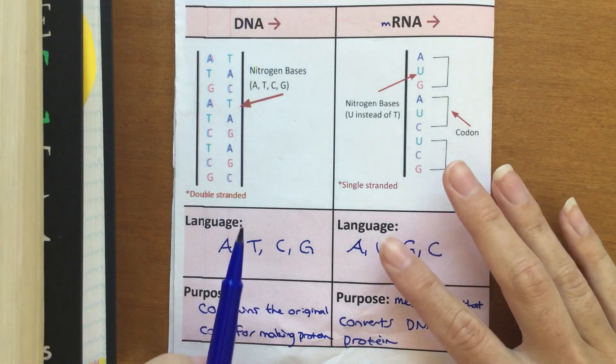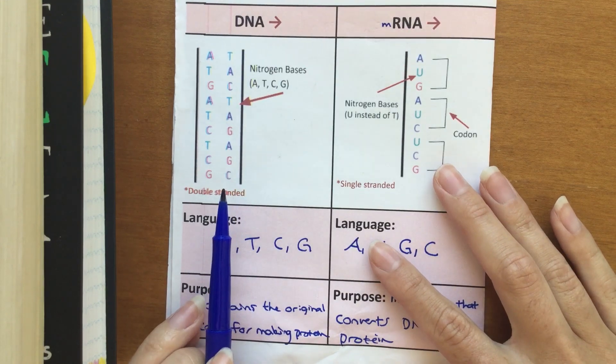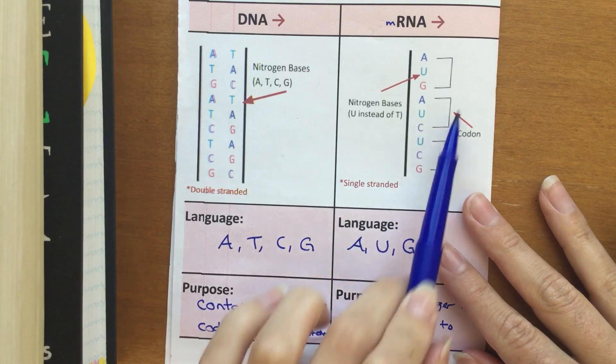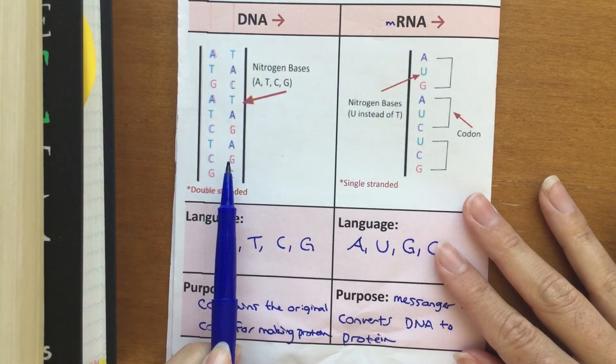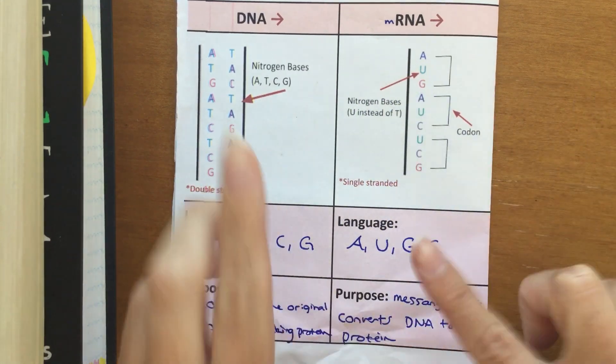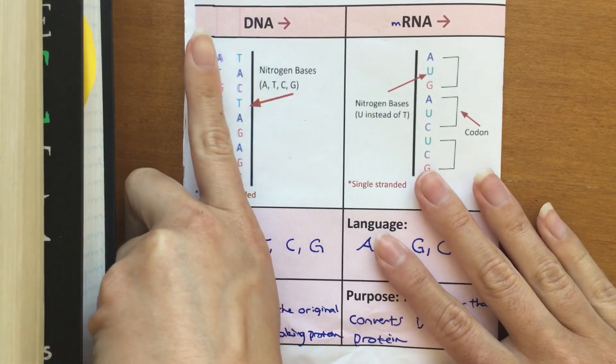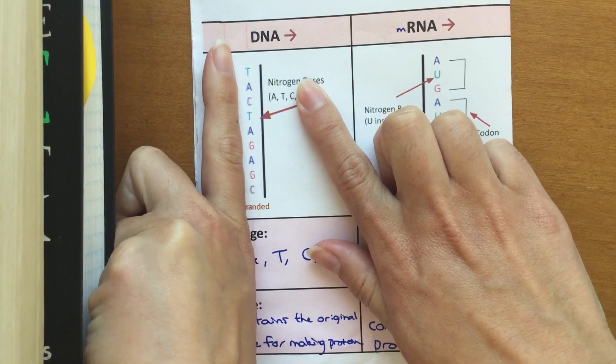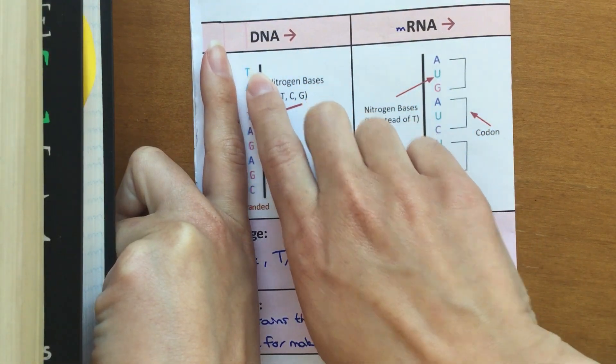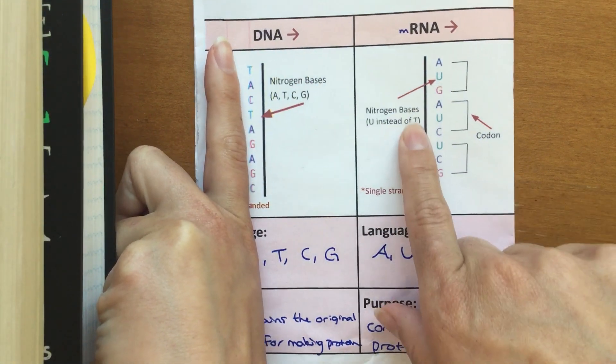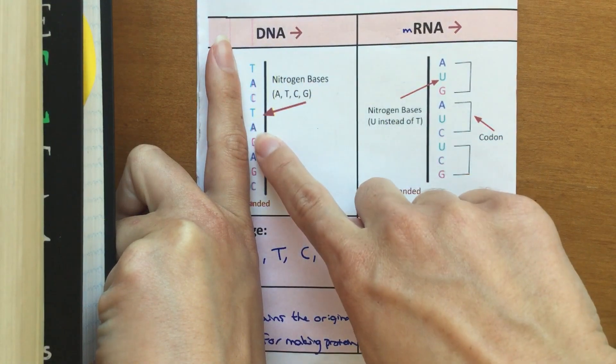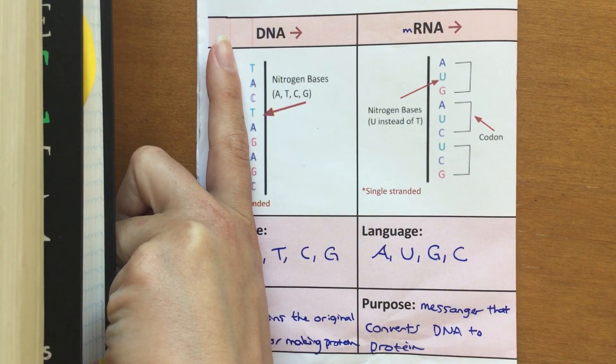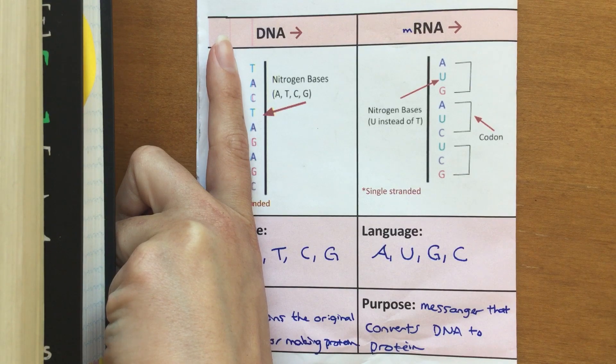So what we've done so far is we started with a double strand of DNA. Something I forgot to mention earlier that I'm going to go over right now is how did we get this RNA based off of the DNA? Here's what we did. We took half of the DNA, so I'm going to cover up one half, and here's what we're left with. One strand is the code that we're going to use to get this RNA. TAC, TAG, AGC.